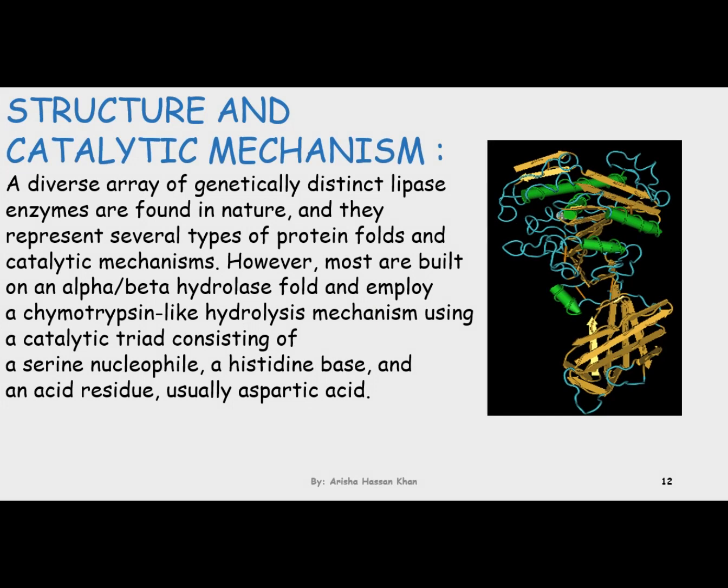To summarize: E plus S synthesizes the ES complex. This ES complex can reverse at the early or initial stage. But once the induced fit model takes place, EP is synthesized. EP further converts into E plus P — the enzyme is freed from the product. The enzyme, now freed, can act on another molecule of the substrate that can fit into that particular enzyme.